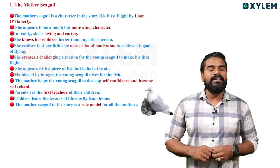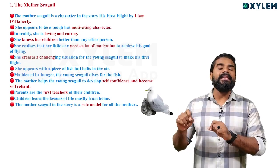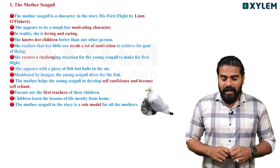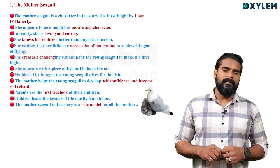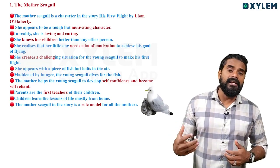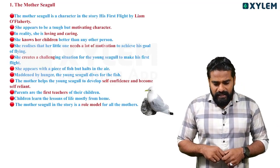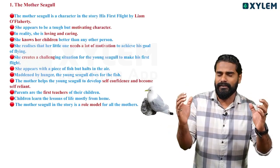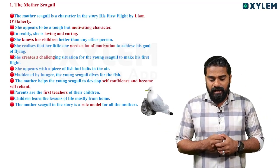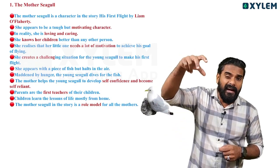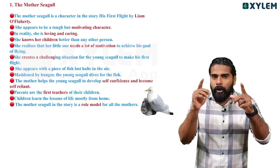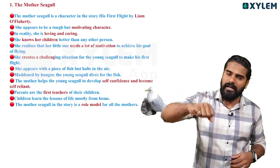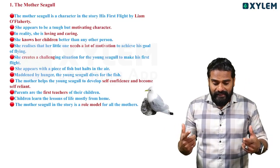In reality, she is loving and caring. She knows her children better than any other person. She realizes that her little ones need a lot of motivation to achieve their goals. She creates a challenging situation for the young seagull to make his first flight. She appears with a piece of fish but halts in the air, and maddened by hunger, the young seagull dives for the fish. The mother helps the young seagull to develop self-confidence and become self-reliant.